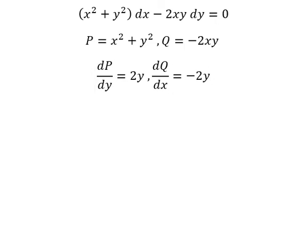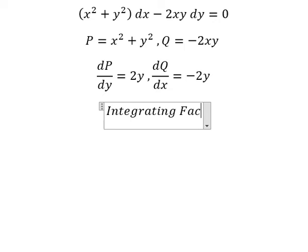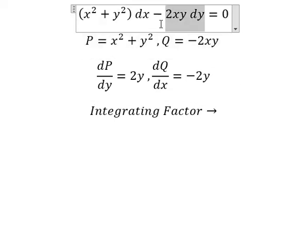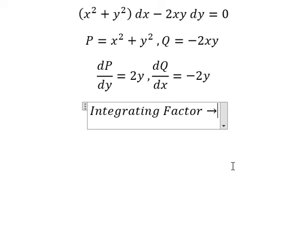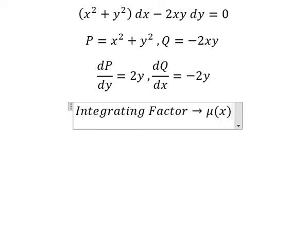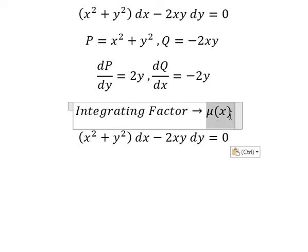We see that this one and this one are not the same, so we can use an integrating factor. We see that we have negative two x y dy and we have two y, two y in here. In this situation I will use mu of s — that means we multiply both sides by this one.